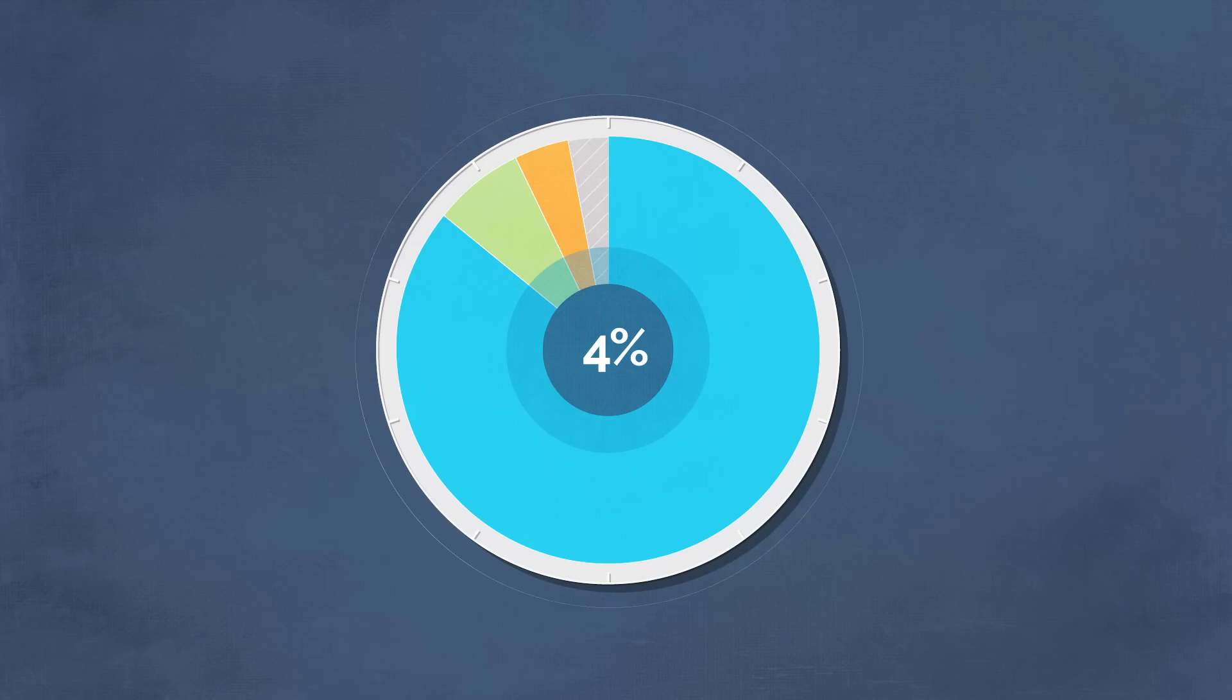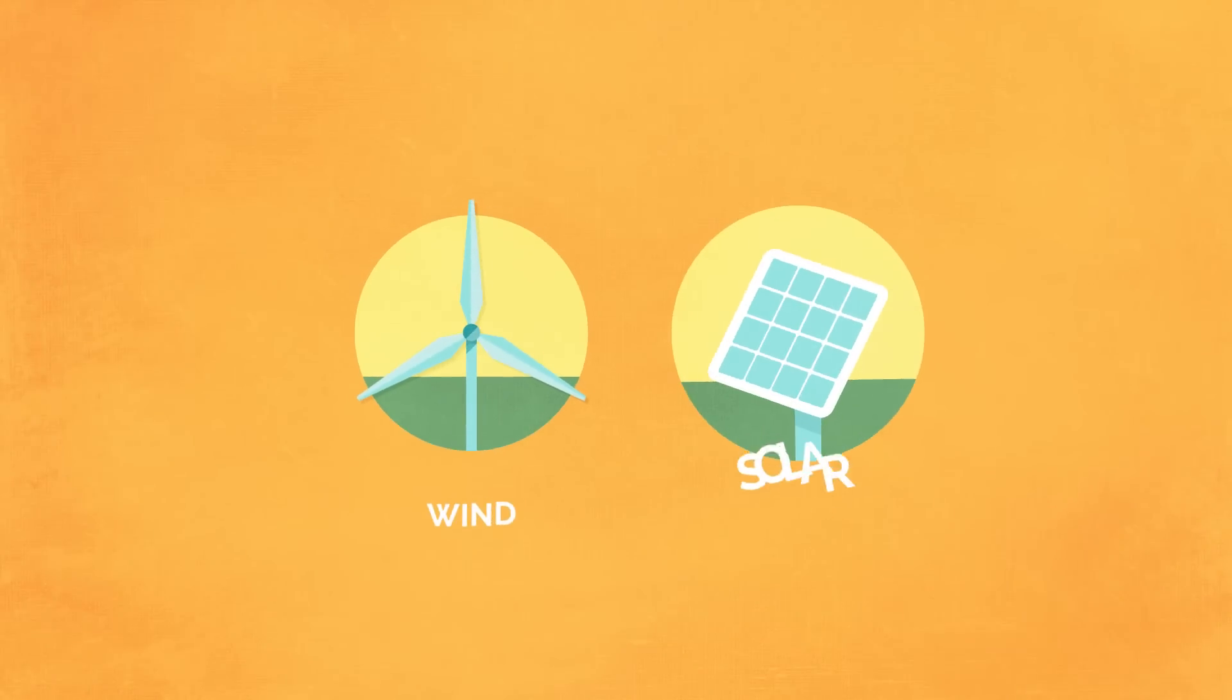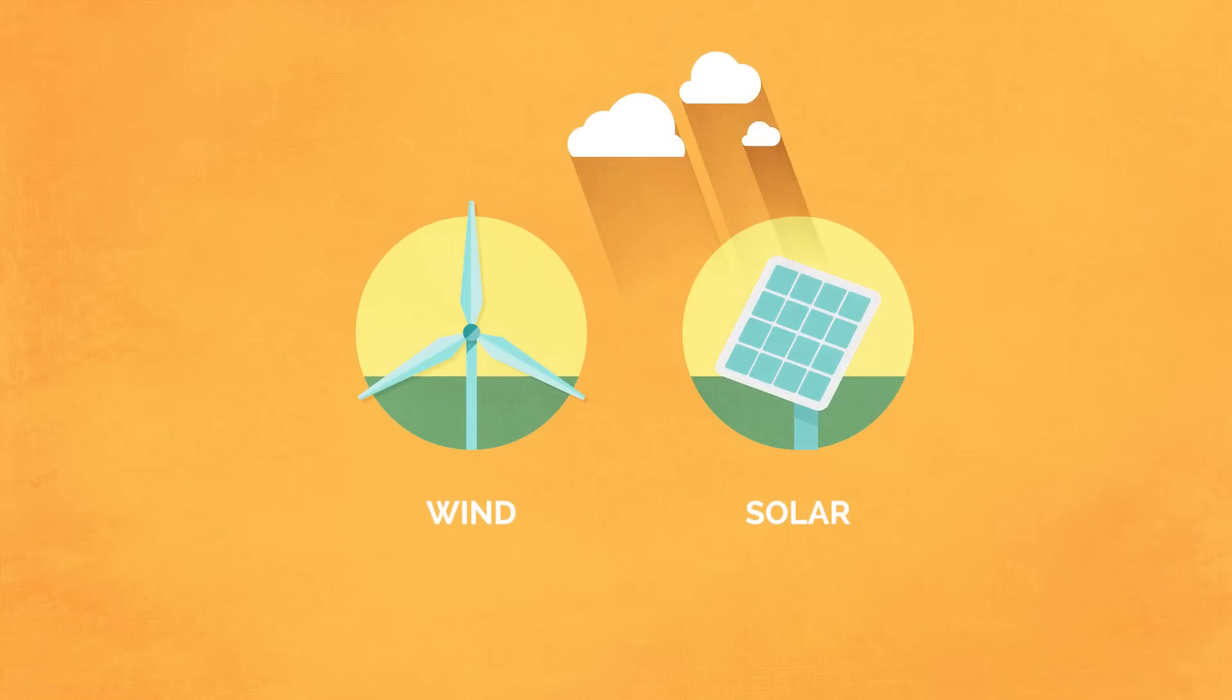About 4% of our electricity comes from wind and solar. They need the weather to be just right in order to work. Wind needs a stiff breeze to rotate their turbines, and solar panels need the sun to shine.